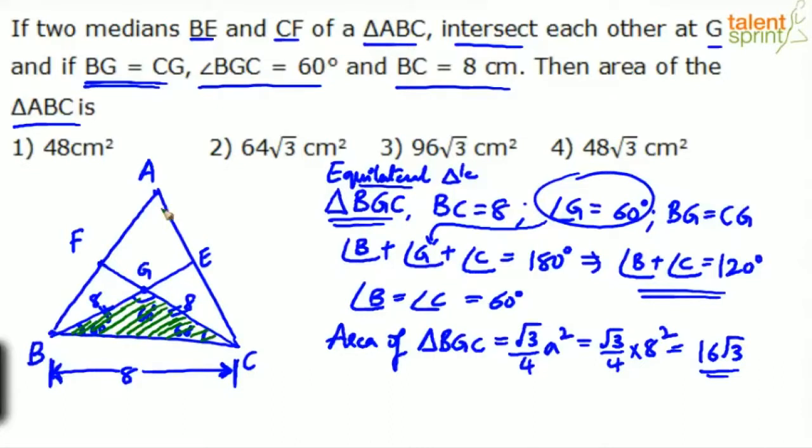Area of this triangle is 16 root 3. But what do we have to find? We have to find the area of the complete triangle. Now if you go by the properties of centroid, a centroid divides the triangle into three equal parts. The centroid along with the median will divide the triangle into three equal parts.